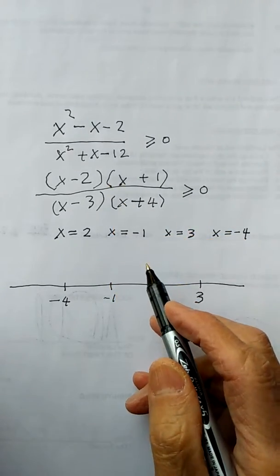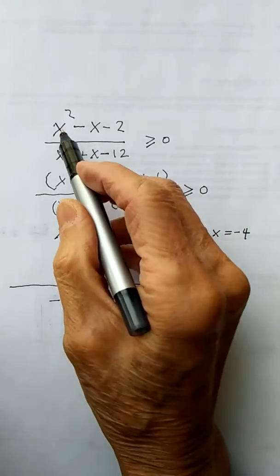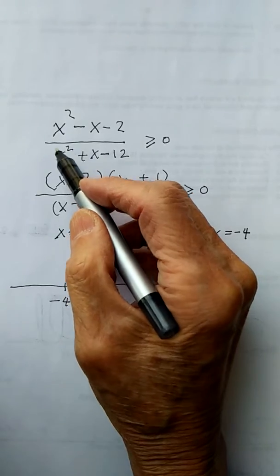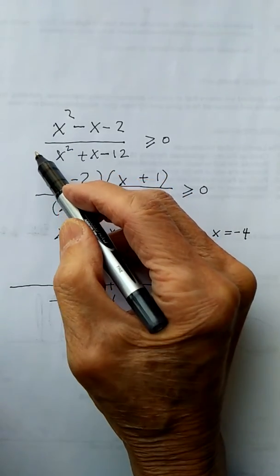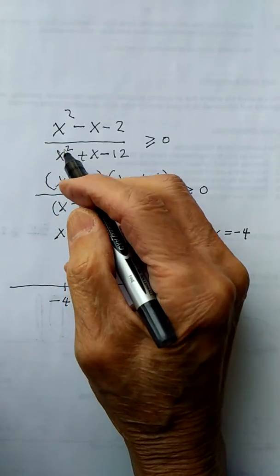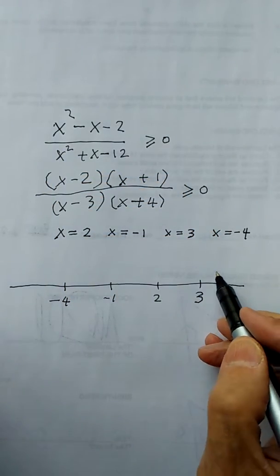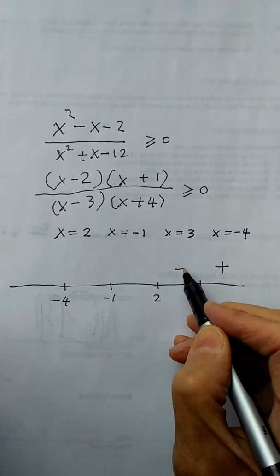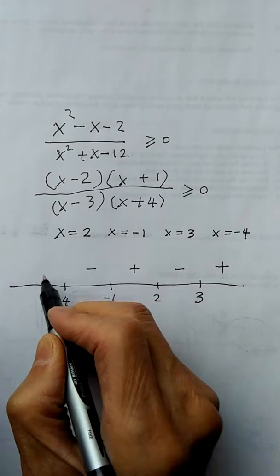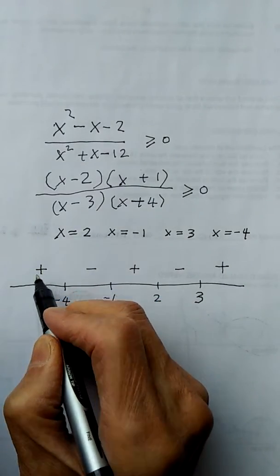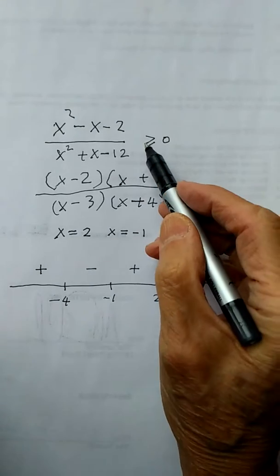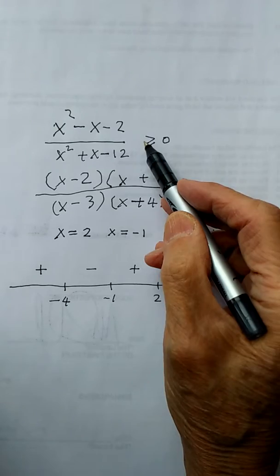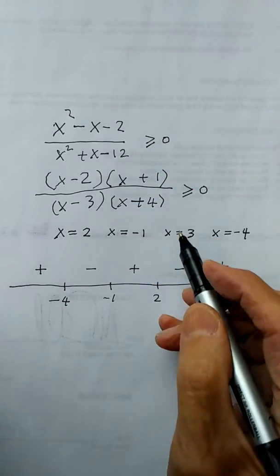Check the sign of the x squared term. The x squared term in the numerator is positive, and in the denominator the x squared term is also positive. So positive divided by positive gives you positive. I start with a positive sign on the right-hand side and alternate: positive, negative, positive, negative, positive. Since I want larger than or equal to 0, I want positive.